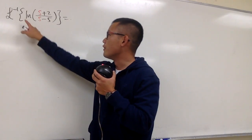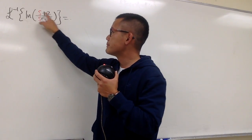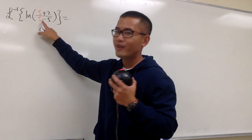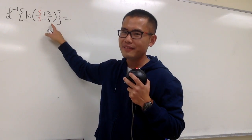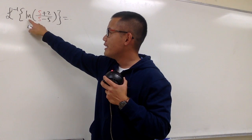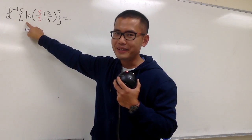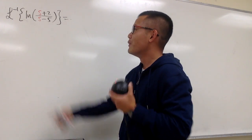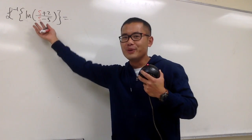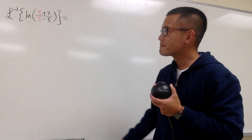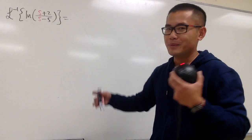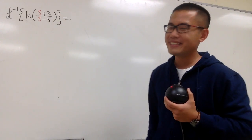We're going to find the inverse Laplace transform of ln of (s+2) over (s-5). We have an ln function right here. How can we handle this?